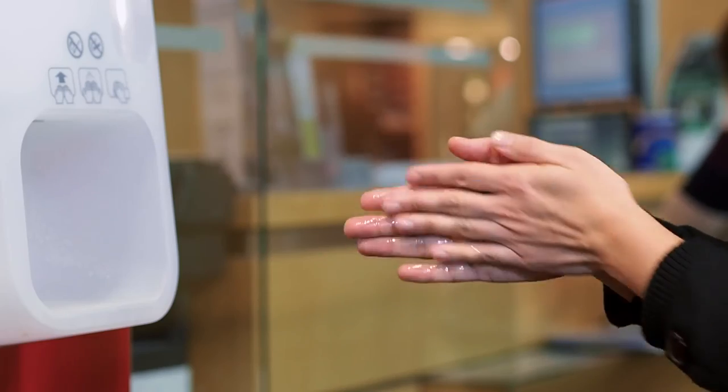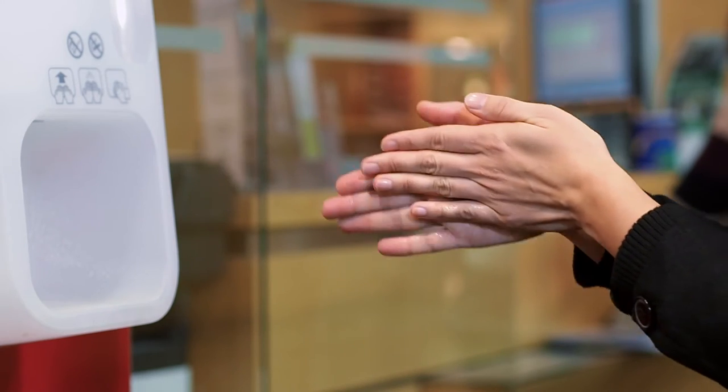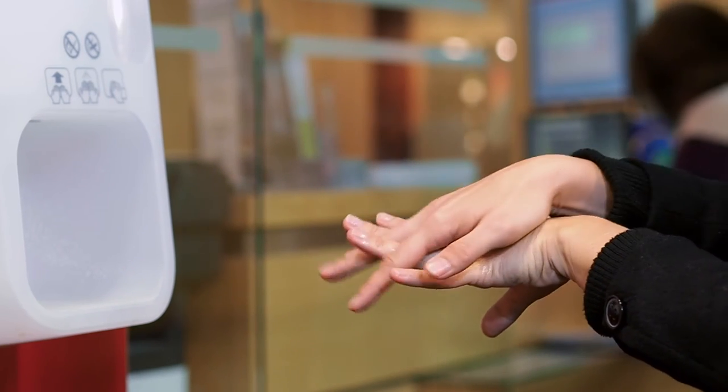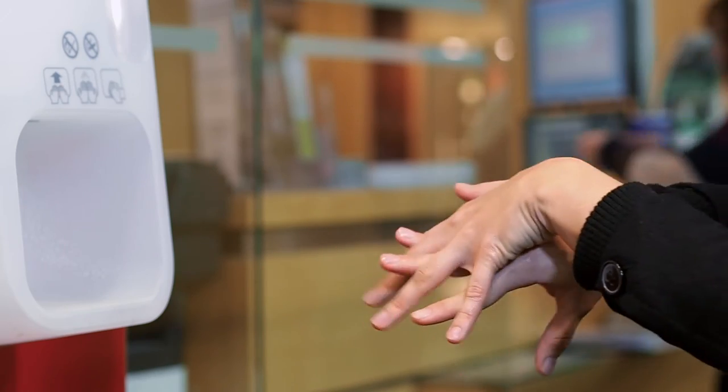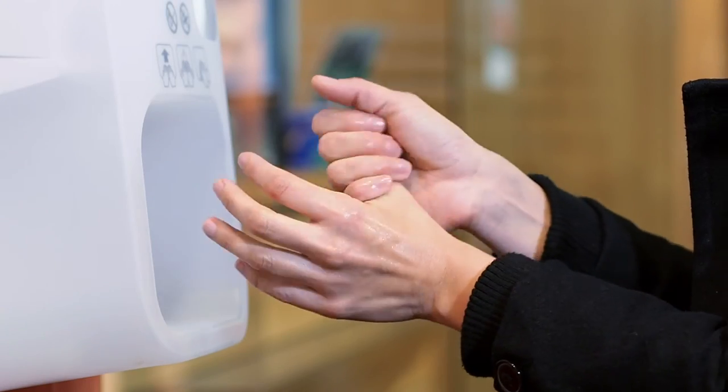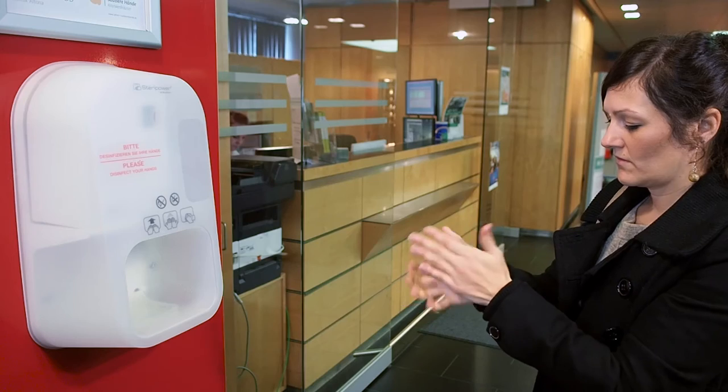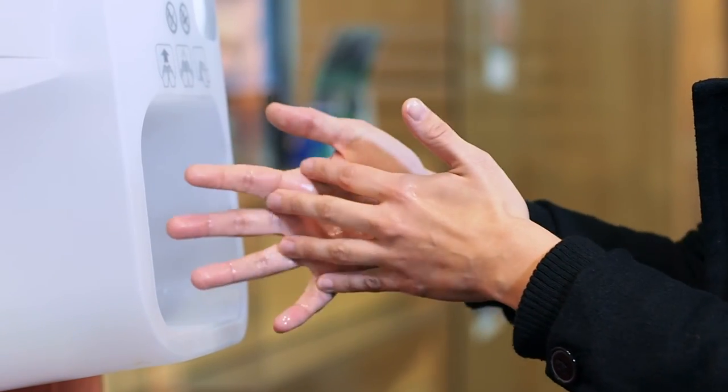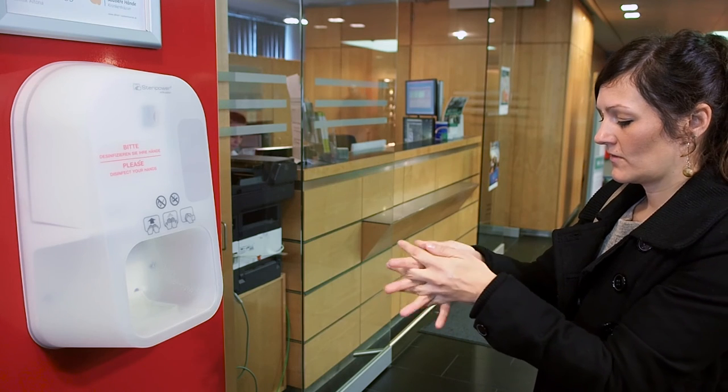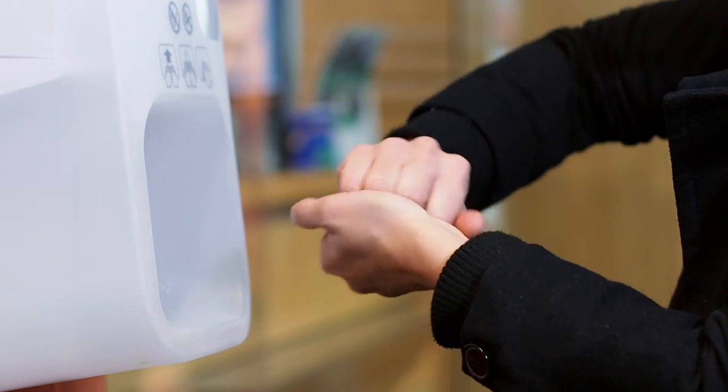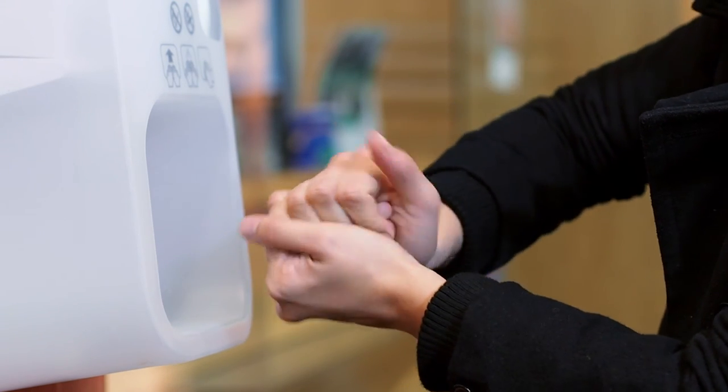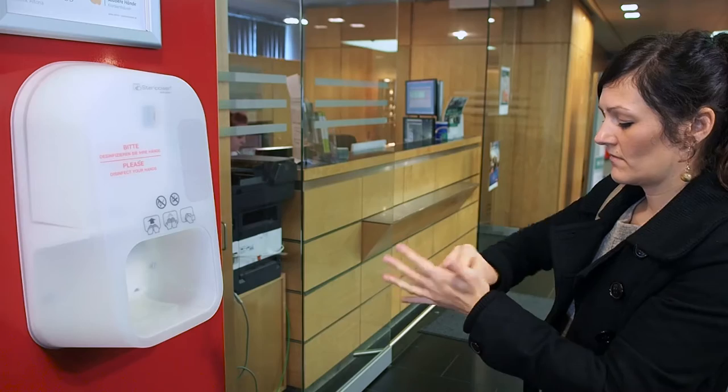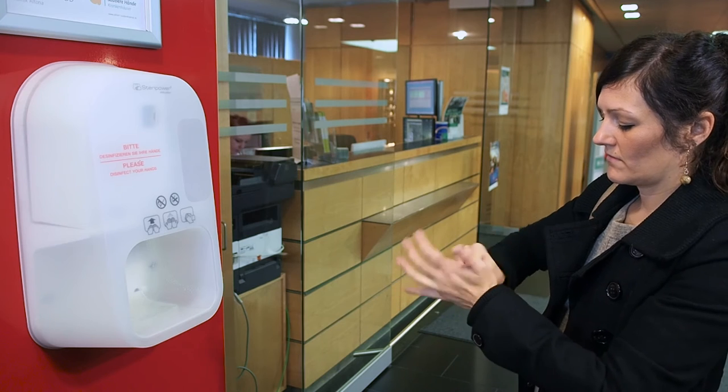1. Palm to palm. 2. Right palm over the back of the left hand and left palm over the back of the right hand. 3. Rotation of the left thumb within the closed right palm and vice versa. 4. Palm to palm with fingers spread out and interlaced. 5. Backs of the fingers to opposing palms with fingers interlocked. 6. Rubbing the tips of the closed right hand fingers in the left palm in a circular motion and vice versa.